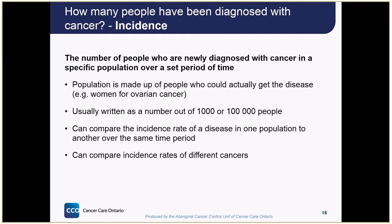Incidence is the number of people who are newly diagnosed with cancer in a specific population over a set period of time, usually one year. When we measure incidence, our chosen population is made up of people who could actually get the disease we are studying. So if we were counting ovarian cancer cases, we wouldn't include men in our population because they don't have ovaries and aren't at risk. We normally measure incidence as the number of cases out of 1,000 or even 100,000 people. We can compare incidence rates between populations, track rates over time, or compare rates of different cancer types.